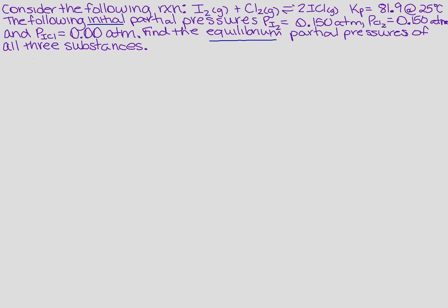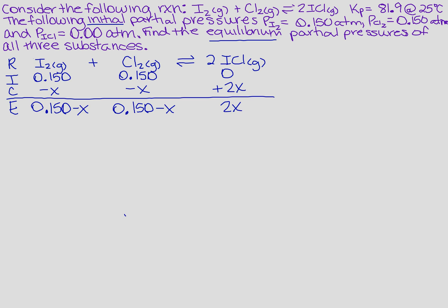When you come back, I'm going to walk you through that. What you should have done for your RICE is to write the reaction, write down all the initials it gave us, then the change we don't know so we're going to use X's. Remember, use the coefficient in front of each substance as the number in front of X. Then you want to add straight down and that gives you what it is at equilibrium.